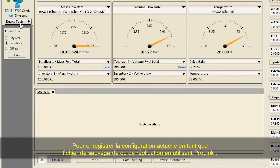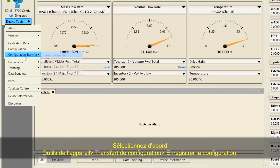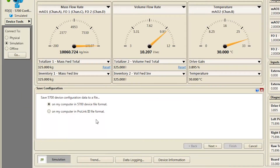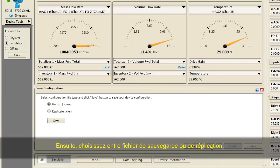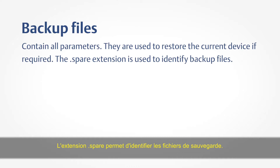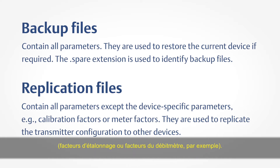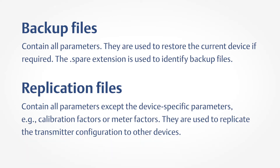To save the current configuration as either a backup file or a replication file using ProLink: first, select Device Tools > Configuration Transfer > Save Configuration. Second, choose Backup or Replicate File. Backup files contain all parameters and are used to restore the current device if required — the .spare extension identifies backup files. Replication files contain all parameters except device-specific parameters such as calibration factors or meter factors, and are used to replicate the transmitter configuration to other devices.